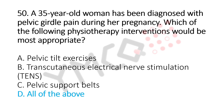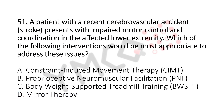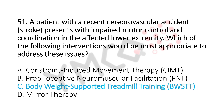Now let's move to question number 51. A patient with recent cerebrovascular accident, that's stroke, presents with impaired motor control and coordination in the affected lower extremity. Which of the following interventions would be the most appropriate? Option A, constraint-induced movement therapy. Option B, proprioceptive neuromuscular facilitation. Option C, body weight supported treadmill training. Option D, mirror therapy. And the answer is Option C, body weight supported treadmill training, BWSTT.